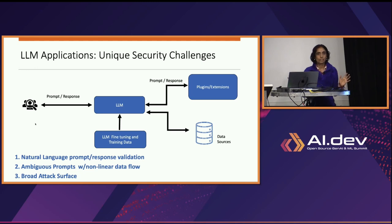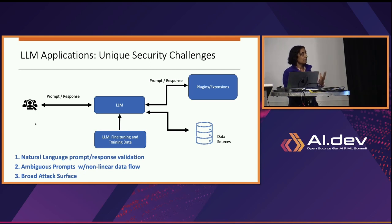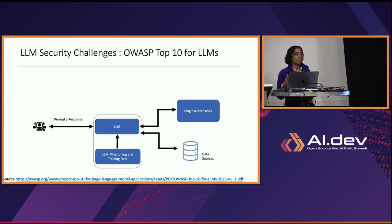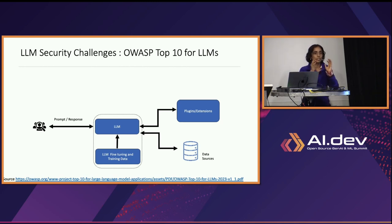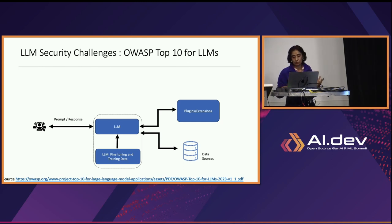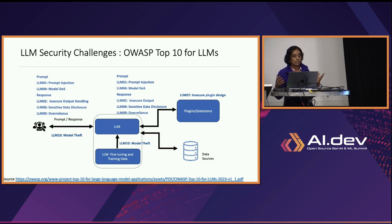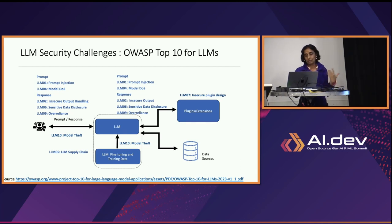The third challenge is that the blast radius of large language models is pretty large. These adversarial machine learning vulnerabilities are very neatly captured and prioritized in OWASP Top 10 for large language models. In this presentation, I'm going to focus on the deployment, operation, and maintenance aspects. Broadly, they are classified into prompt and response security issues, large language model plugin issues, design issues, and supply chain issues.